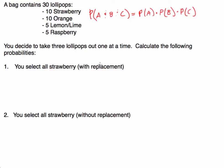When we talk about independent trials, what we're saying is that A happening, B happening, and C happening are unaffected by each other. If A happens, that's not going to affect the probability of B. If B happens, that's not going to affect the probability of C. For example, every time you flip a coin, getting tails is not going to affect the probability of heads or tails on your next flip. Each trial is independent — unperturbed by the previous trial.